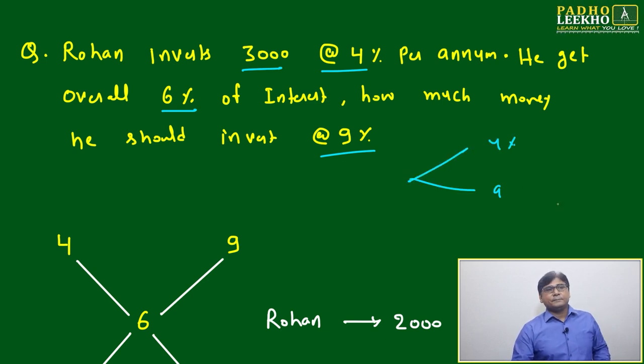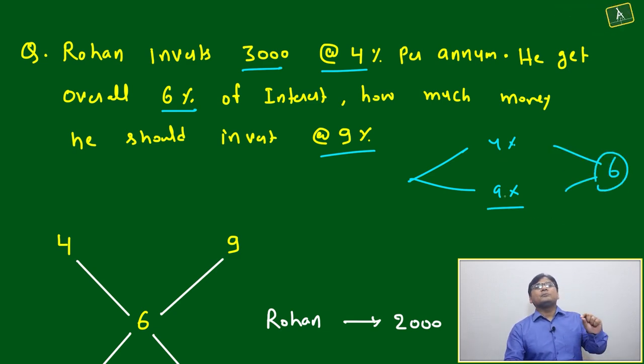Whatever Rohan is having in money, he is investing in two parts - one is four percent, one is nine percent. Overall return he is getting is six percent. The question is asking what will be the ratio between four and nine to get the six.